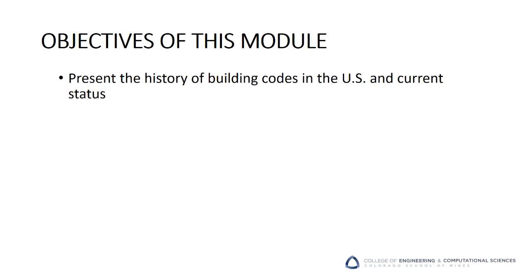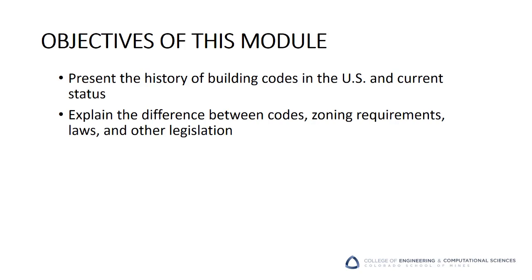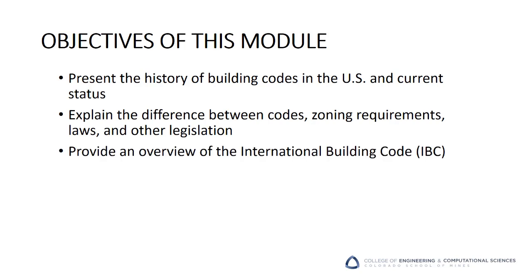The objectives of this module are to present the history of building codes in the U.S. and current status, explain the difference between codes, zoning requirements, and laws, and provide an overview of the International Building Code and present a methodology for conducting a code analysis and tabulating design criteria.